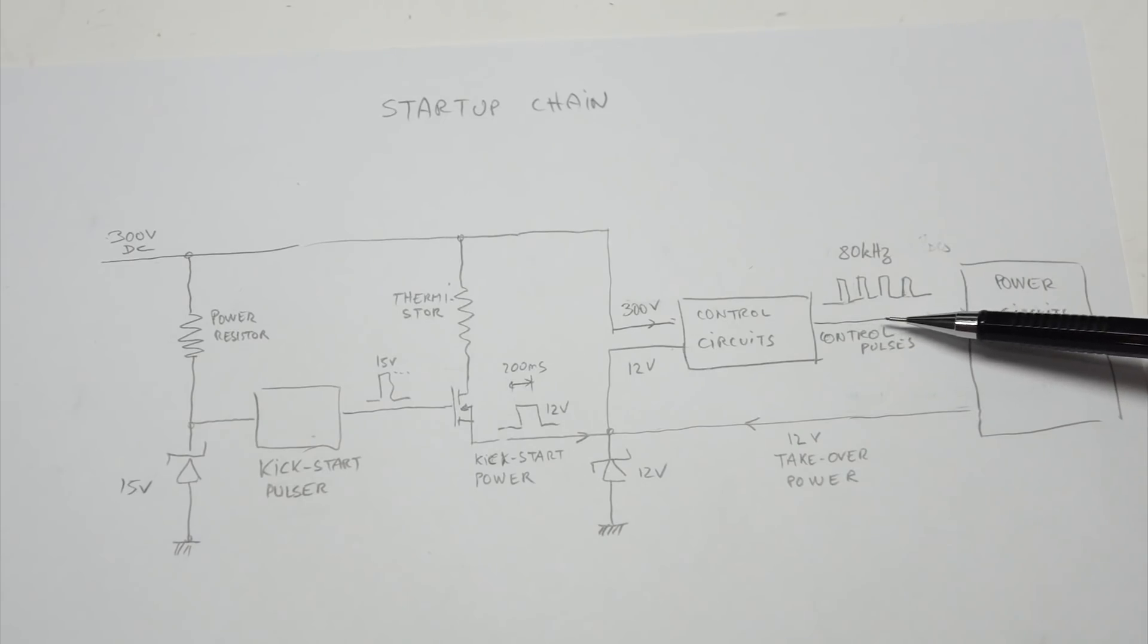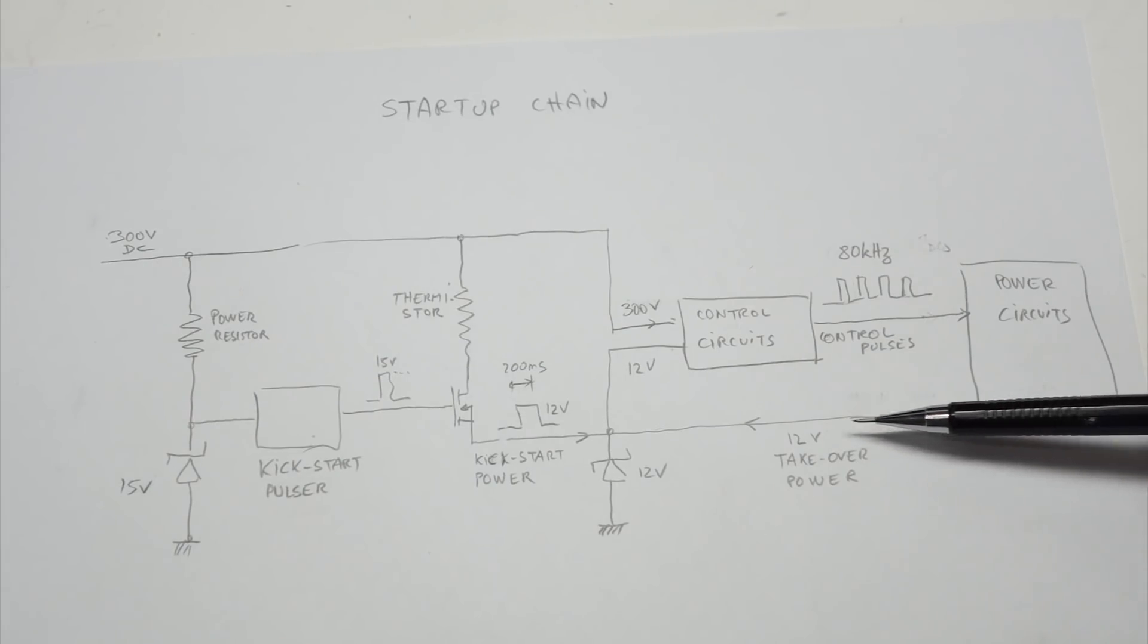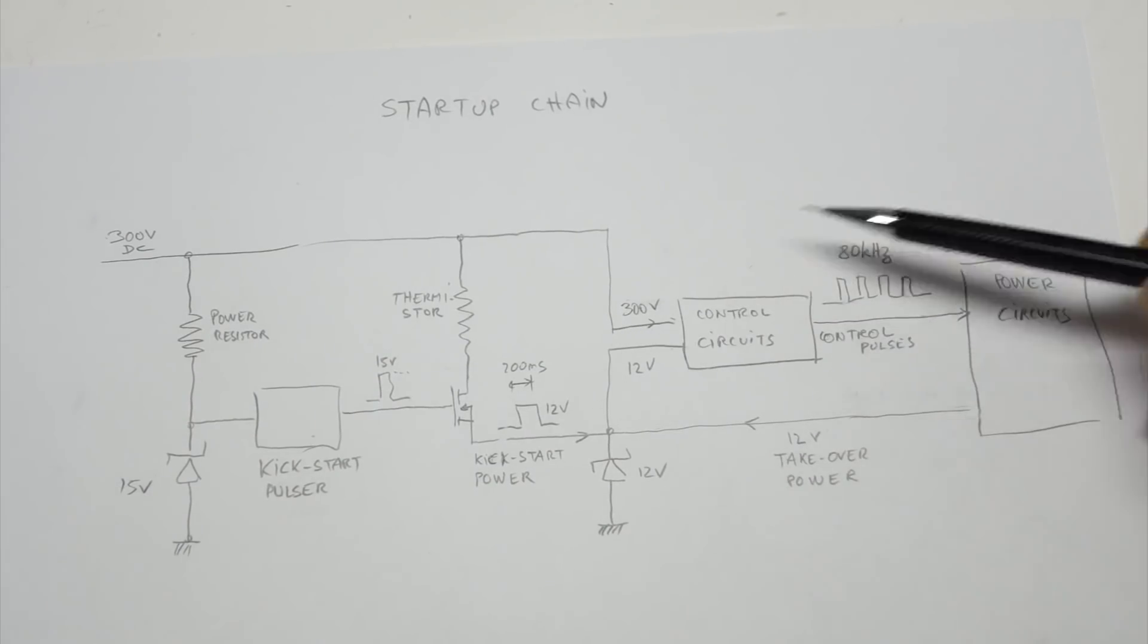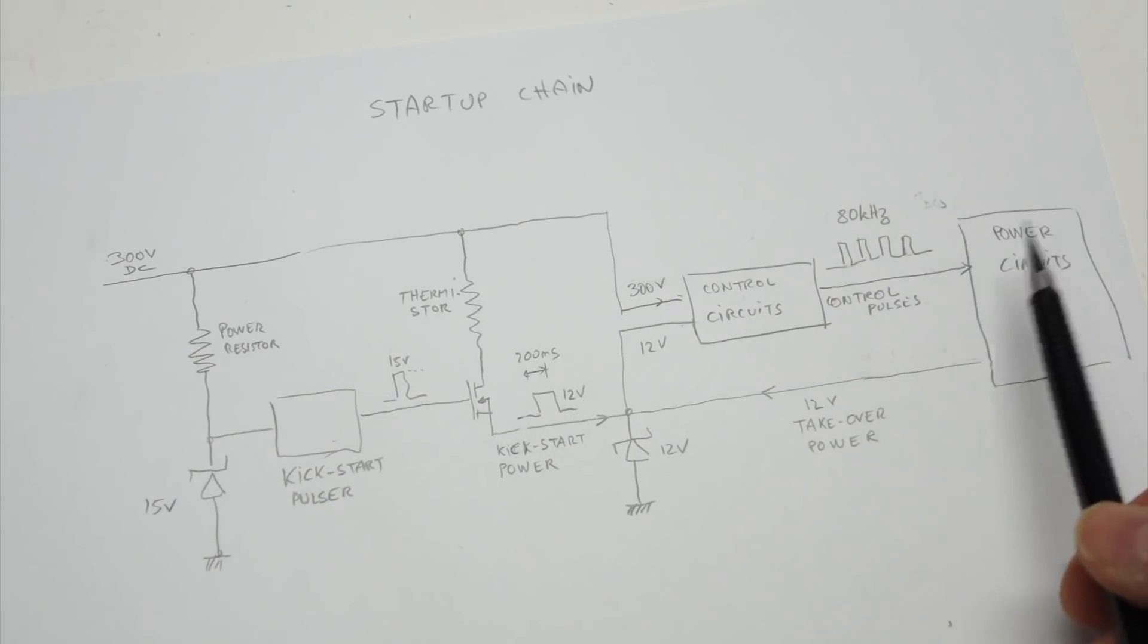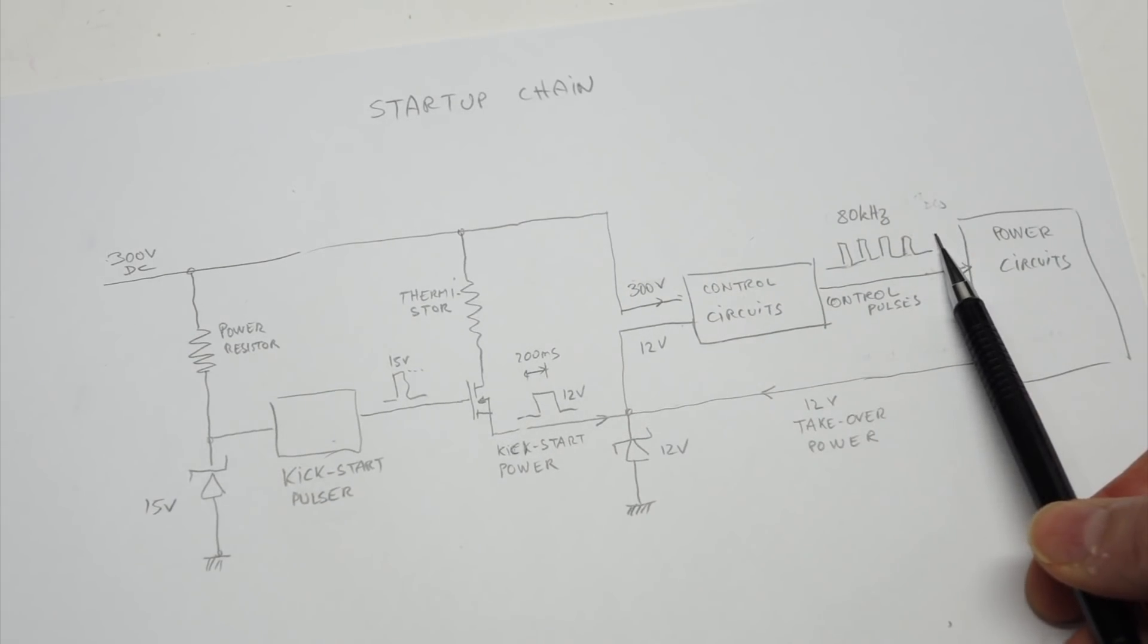And I should check that I have control pulses. So, right now my power circuits are not there, there's no MOSFET, so I will not get the 12 volt takeover power that will complete the chain and get it started. But at least I can check that I go all the way through 80 kHz here.